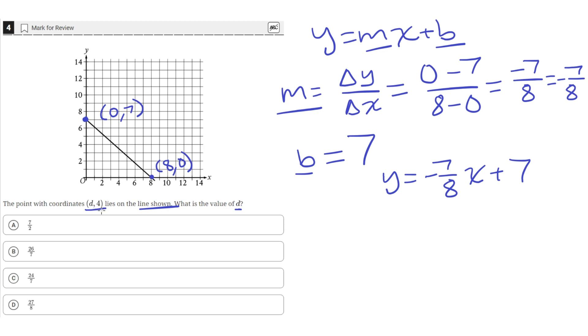Let's plug in d and 4 into x and y to get the value of d. So y is 4, so we plug in 4, and then negative 7 eighths times x, but x is equal to d. So put in a d and then plus 7.